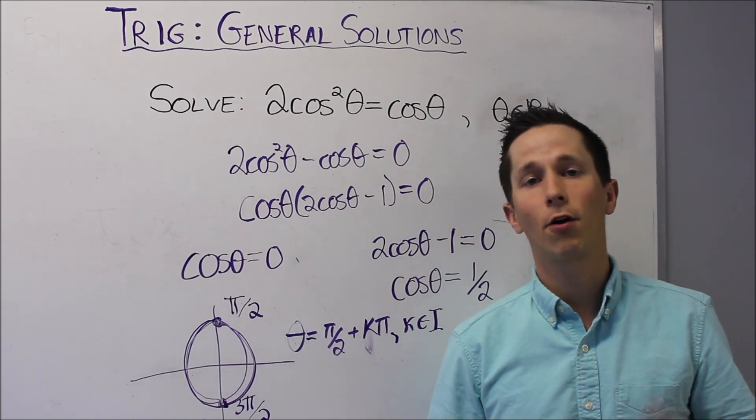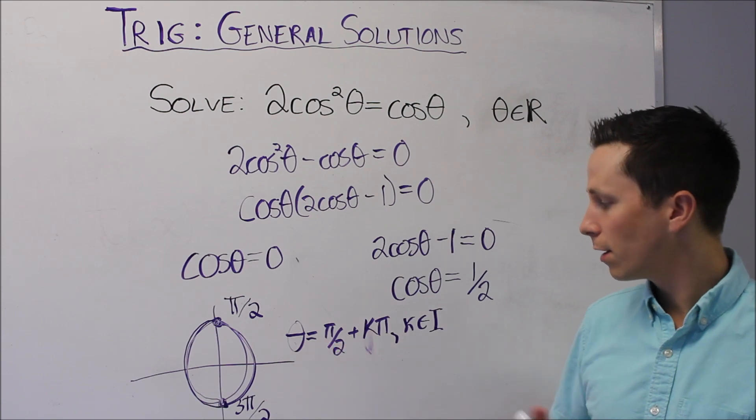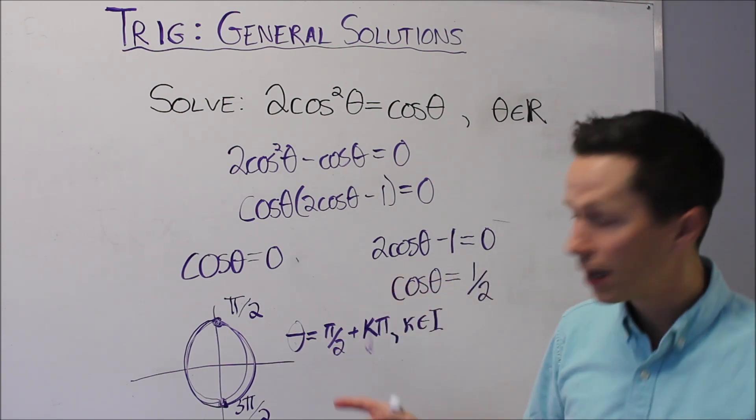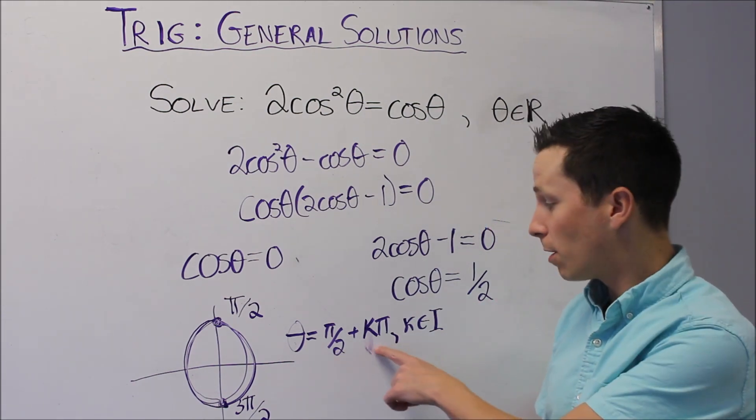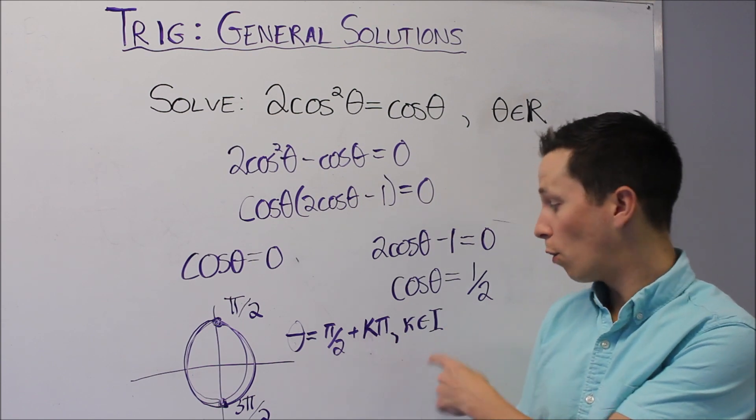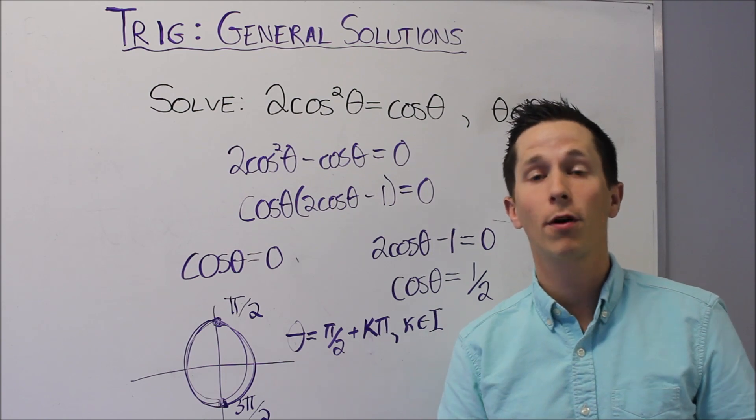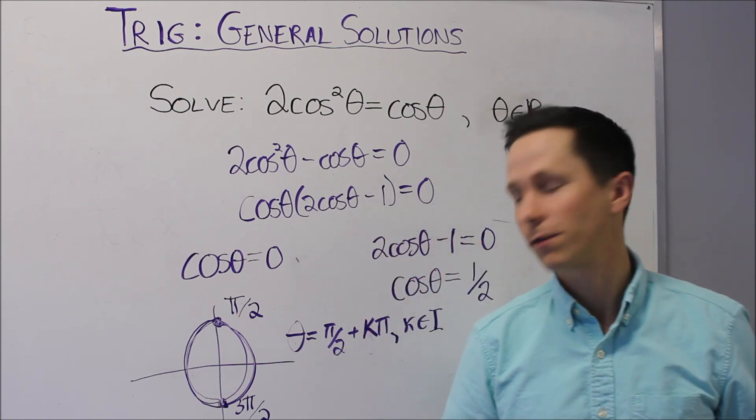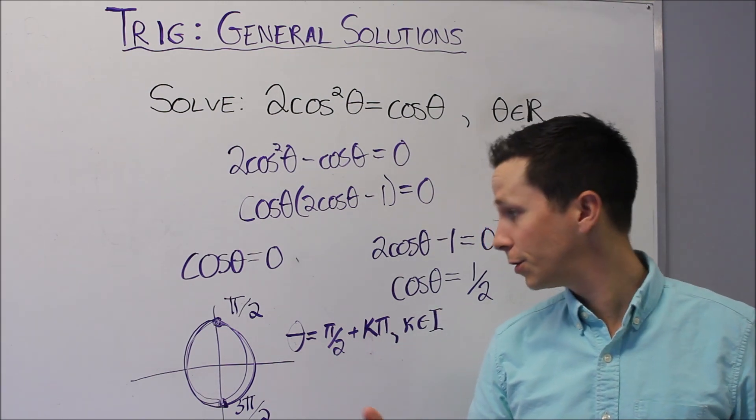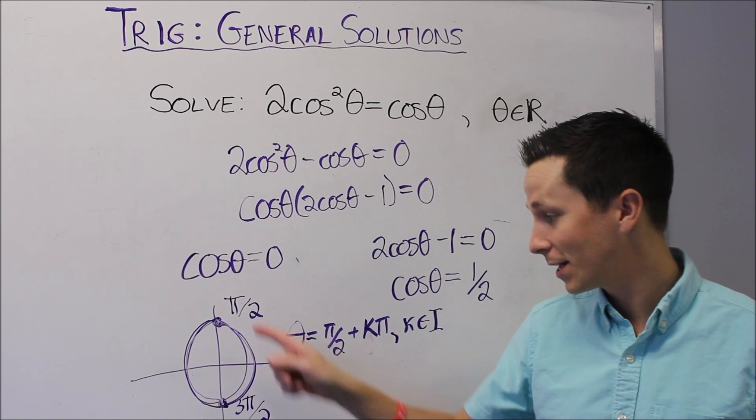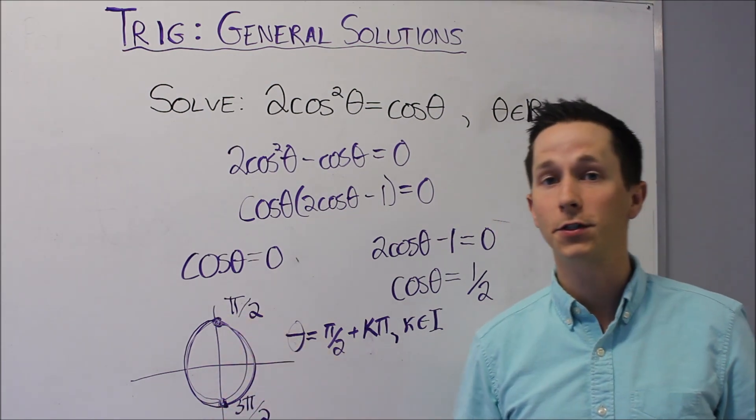And I'm going to specify that k is an element of the integers. You can either use capital I or capital Z sometimes for integers. So what does this mean? It means we can start at an angle of π over 2 for theta and add any multiple of π or subtract. And that's where the integers comes in. Integers are negative 1, negative 2, negative 3, negative 4, and positive 1, positive 2, positive 3, positive 4, or 0. So that's going to include π over 2 and any multiple of π afterwards. So that way it's going to keep hitting every single time around the circle at these two points.